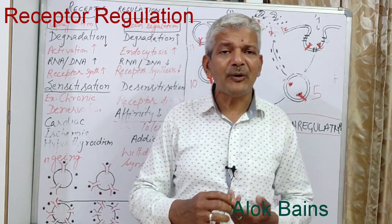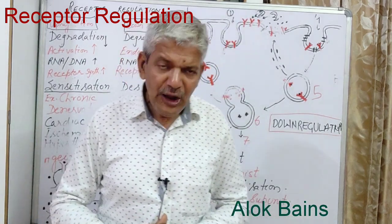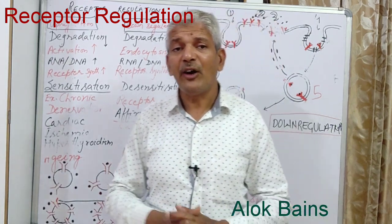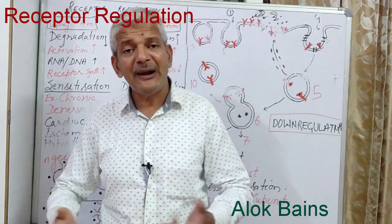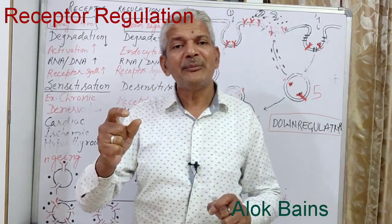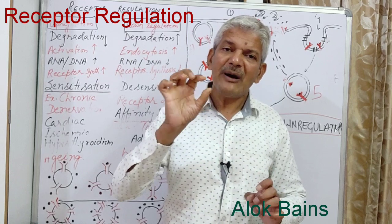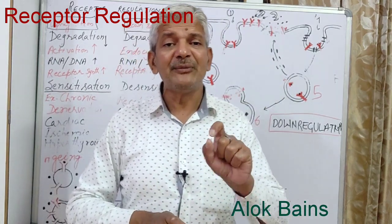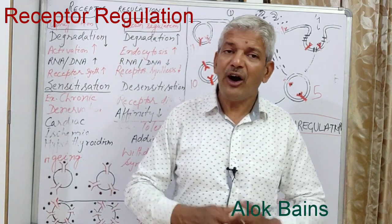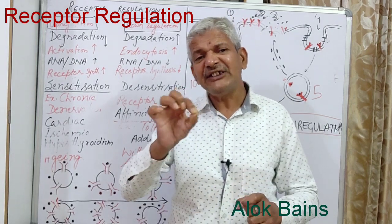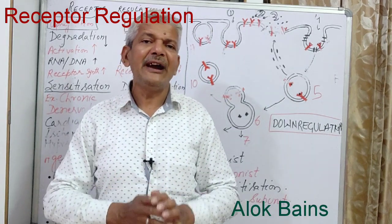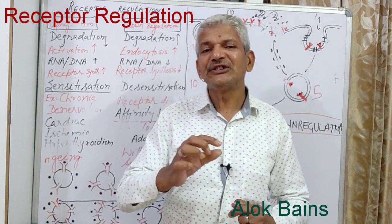For example, in conditions like hyperthyroidism or heart problems, up-regulation occurs. Take the example of dopamine — deficiency of dopamine causes Parkinsonism. With aging, the number of nerve cells decreases, so the nerve cells that produce dopamine decrease, and the amount of dopamine decreases. The cell does not receive the required dopamine to produce normal physiological effects, which leads to Parkinsonism. However, in many people this does not develop because when dopamine decreases with aging, the nerve cells increase their number of receptors to combine with available dopamine — this is up-regulation.